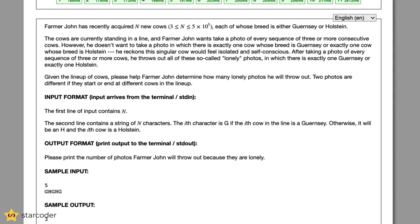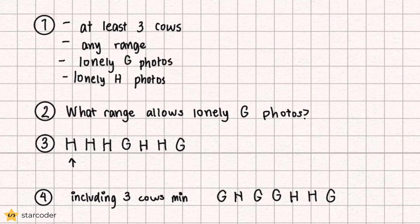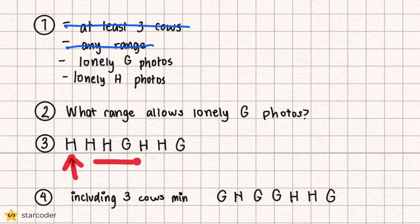Let's look at the algorithm for this question. In order to solve it, we can first come up with an easier version to find the general idea. There are lots of different restrictions this question poses, so we can create a simpler version that gets rid of all of them except one. Let's assume we have the same goal of throwing away lonely cow photos, except we can have any number of cows in the photo, and it has to start at one specific cow, ending anywhere.